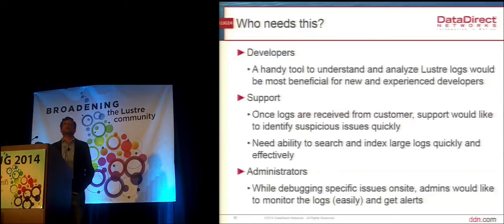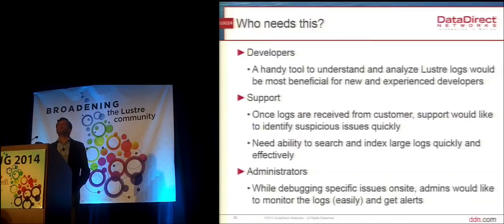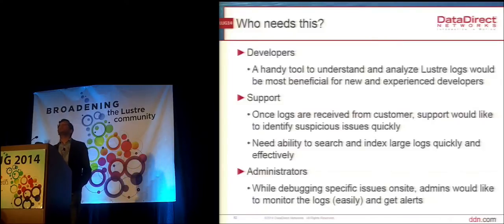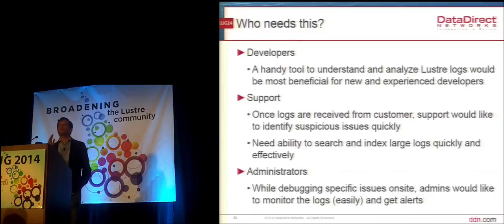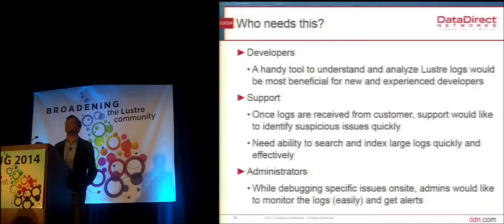And administrators — in some scenarios, you could have a lab or a site where you have the log analyzer in place, able to look at logs on certain OSSs, MDSs, or certain clients, and automatically notify when a certain log line or certain correlated log lines are seen. So an event happens, a log happens, and then you see a crash or a warning — how do you identify this on the fly without constantly grepping and looking at it all the time?